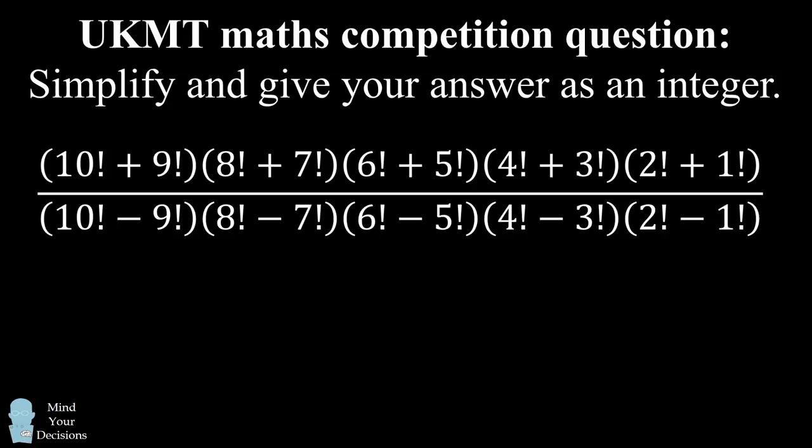The first term is 10 factorial plus 9 factorial. The second term is 8 factorial plus 7 factorial. The third term is 6 factorial plus 5 factorial. The fourth term is 4 factorial plus 3 factorial, and the final term is 2 factorial plus 1 factorial.